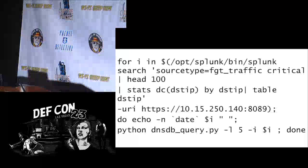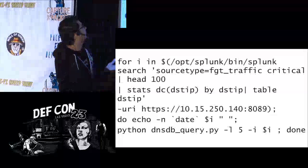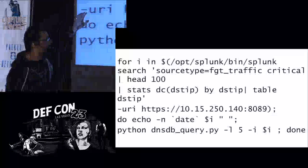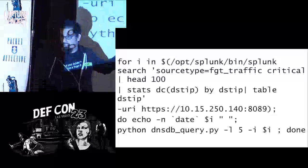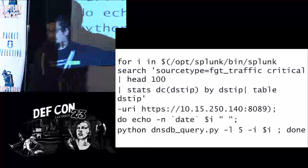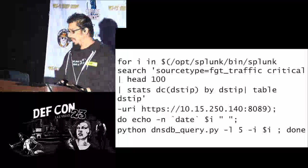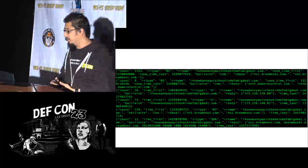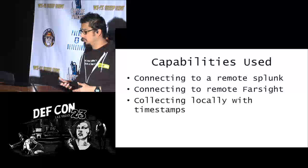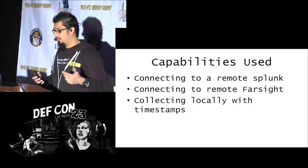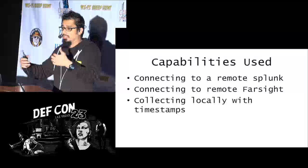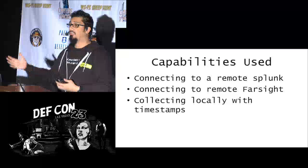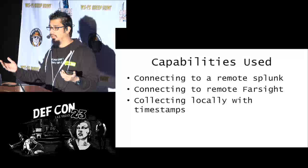One thing many people don't know is that Splunk has a CLI — you can run just about any command from the CLI that you run on the web UI. Here's an example: look at a set of logs from a firewall, find the top IP addresses, and look those up against the Farsight database. It's just a for loop: for anything you get from your Splunk search, execute the Farsight script and get back what's related to that particular IP address. Both tools are remote — nothing is installed locally — and you're collecting timestamps to know when you checked something.